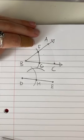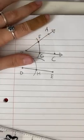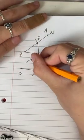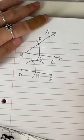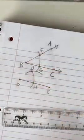Next, I'm going to make a point where those two arcs intersect and label it J.